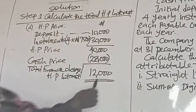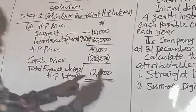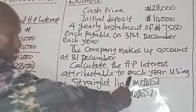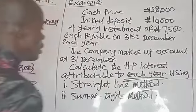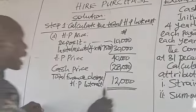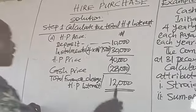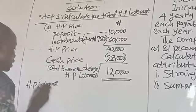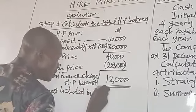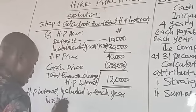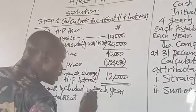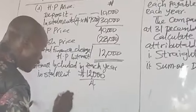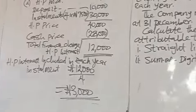This ₦20,000 is the Hire Purchase Interest included in all the installments. Now, you need the Hire Purchase Interest attributable to each year. Under the Straight Line Method, divide the Total Finance Charge of ₦20,000 by the number of installments, which is 4. That gives ₦5,000 per year — that is the Straight Line Method result.